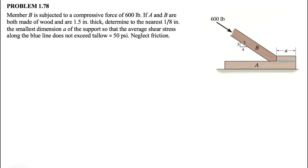We have member B that is subjected to a compressive force of 600 pounds. We know that A and B are both made of wood and are 1.5 inches thick. We need to determine, to the nearest 1/8 inch, the smallest dimension A of the support so that the average shear stress along the blue line does not exceed 50 psi, and we can neglect the friction.